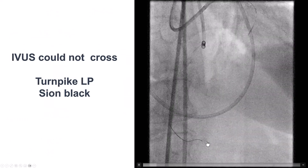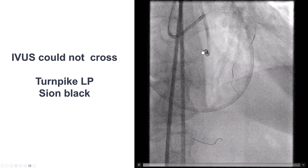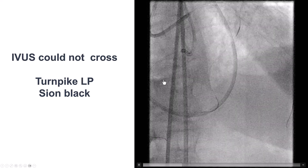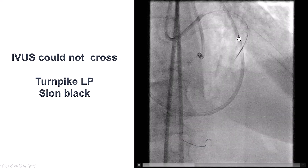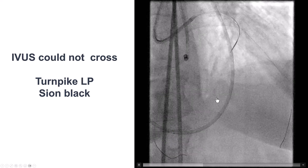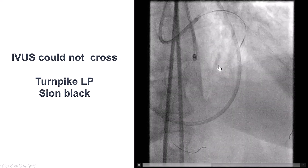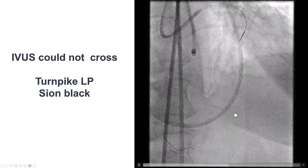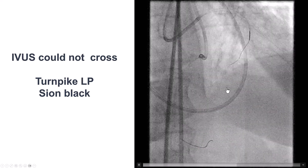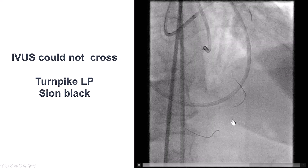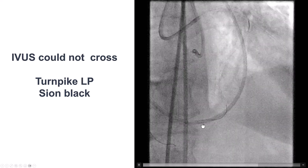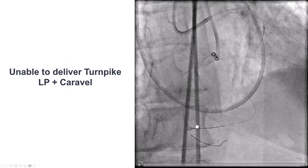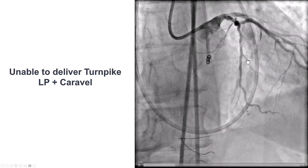We advanced the guide wire into the marginal, but we could not deliver an IVUS into the side branch. As a result, we decided to switch to retrograde crossing. This is a Turnpike LP with a Sion black guide wire, and during surfing, we were able to direct this wire all the way into the PDA. It took a while — it's a tortuous course, but the wire seems to go in the right place, so we did an injection to confirm.